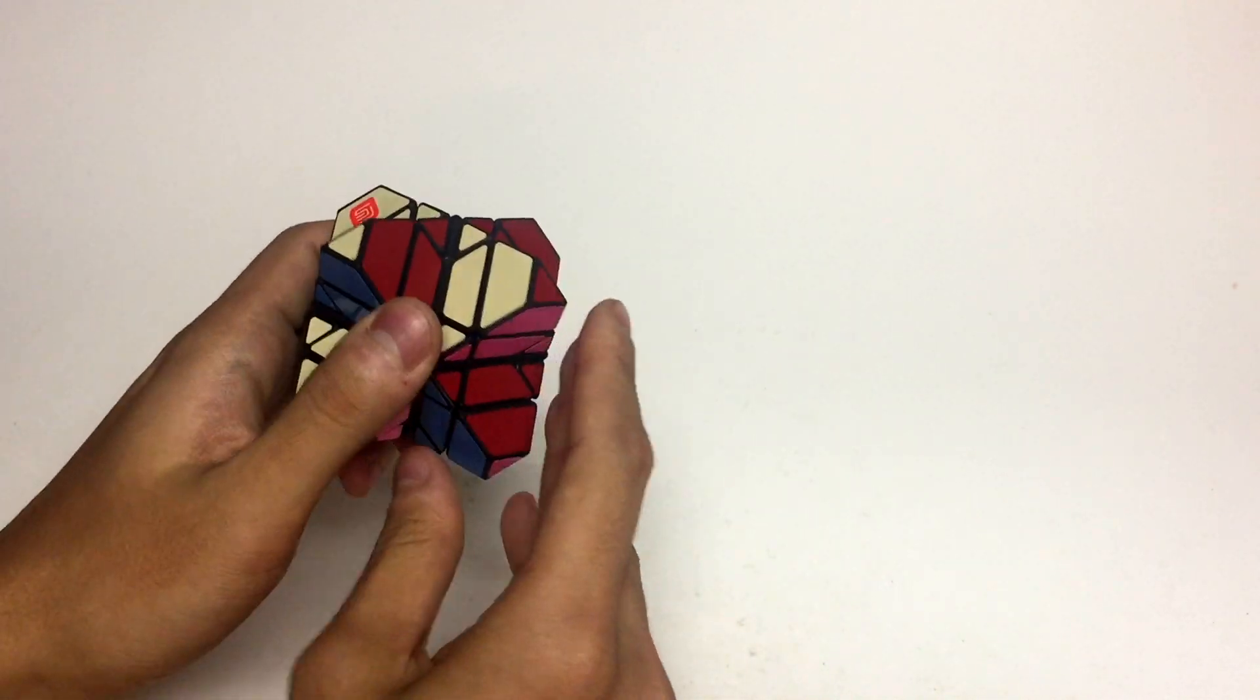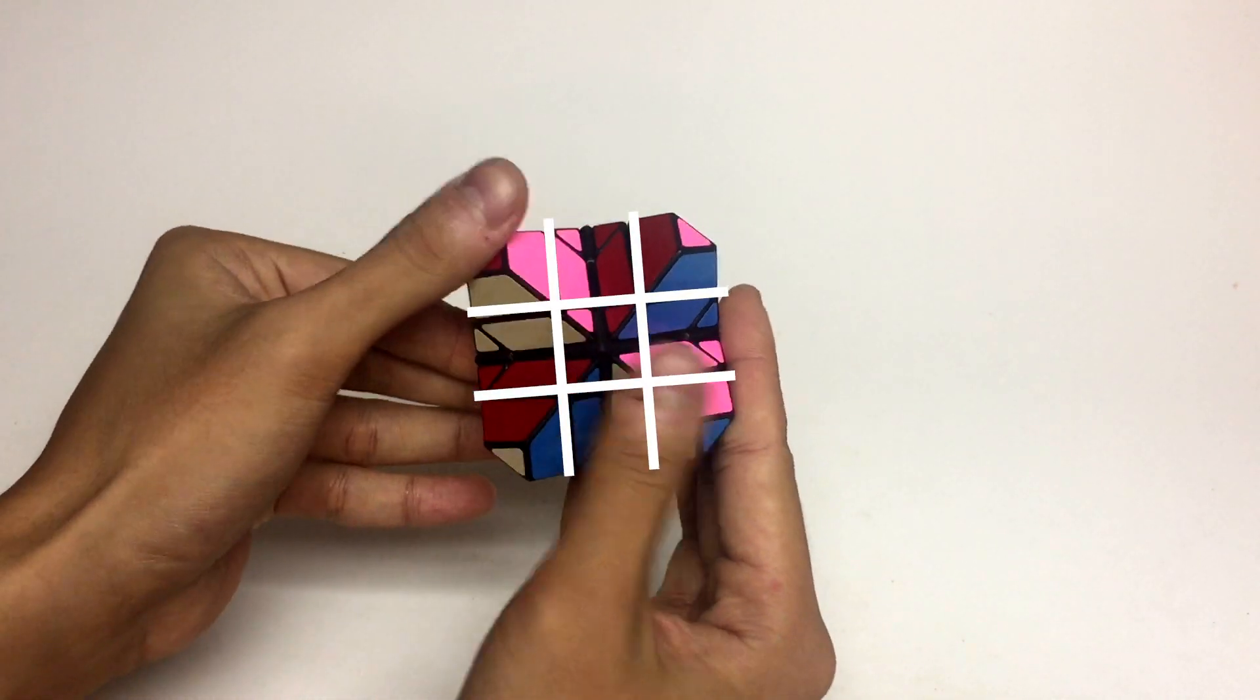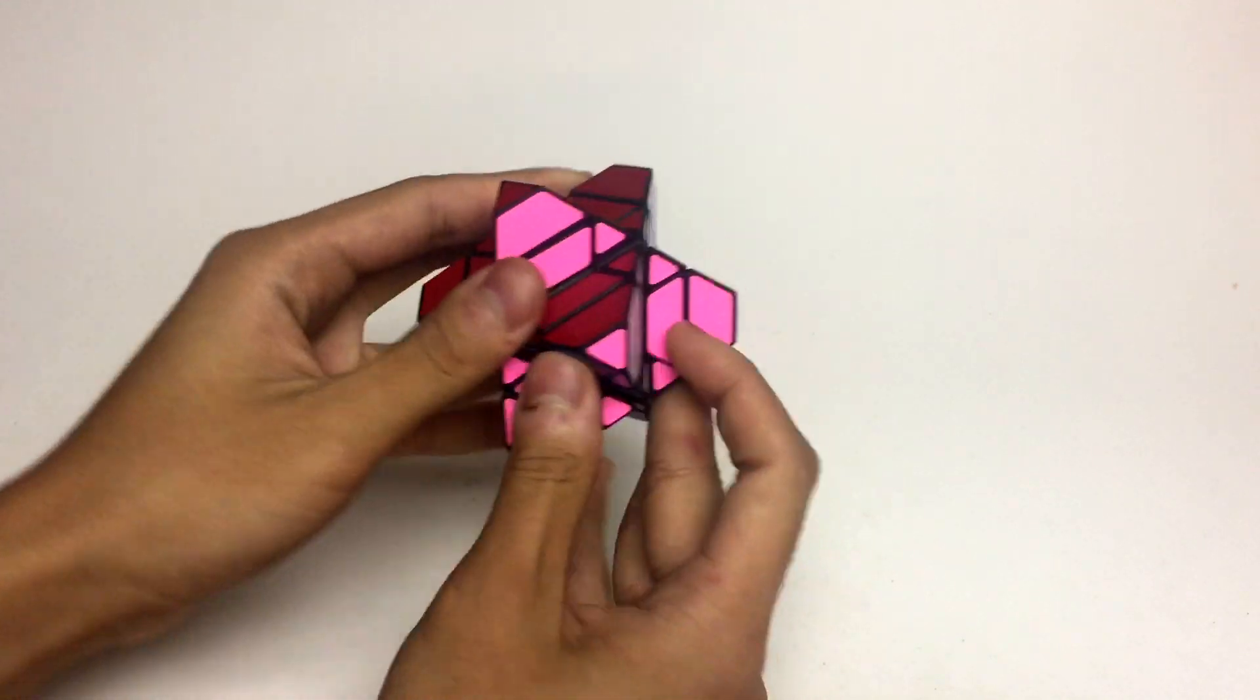The face turns are basically 3x3 turns. If I hold it up like this, you can see sort of the 3x3 shape.